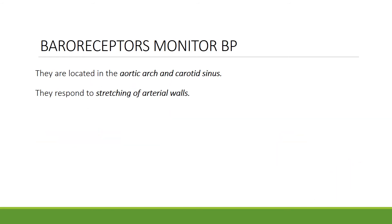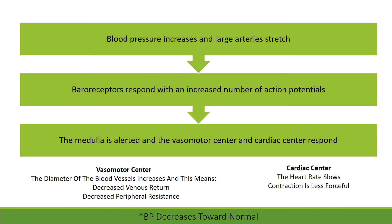We have built-in automatic devices that monitor blood pressure called baroreceptors, located in the aortic arch and the carotid sinus. They respond to the stretching of the arterial walls. As blood pressure increases, large arteries stretch and send a signal to the baroreceptors, which respond by sending out an increased number of action potentials, alerting the medulla. The vasomotor center increases the diameter of blood vessels, decreasing venous return and peripheral resistance, while the cardiac center slows heart rate and makes contraction less forceful — all helping to bring blood pressure back to normal.